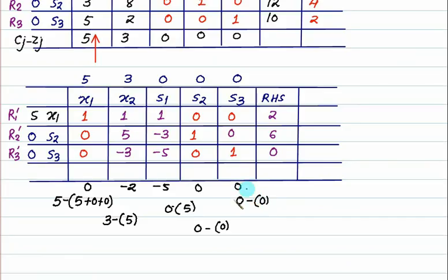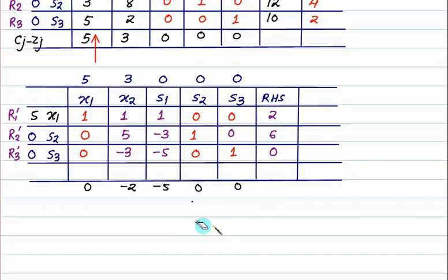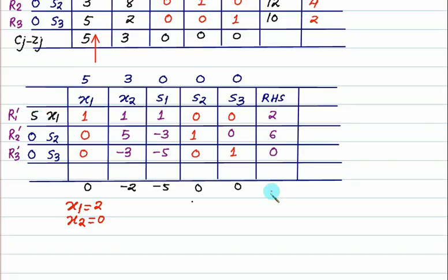The optimal solution has been reached because all values in Cj minus Zj are either 0 or negative. So x1 equals 2 and x2 equals 0 is the optimal solution. Putting these values back: 5 into 2 equals 10, so the maximum profit is 10.